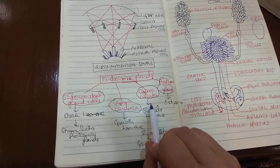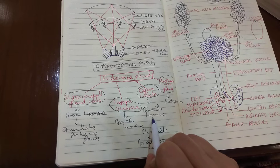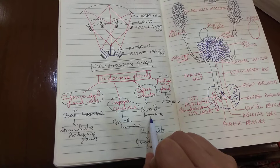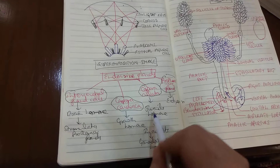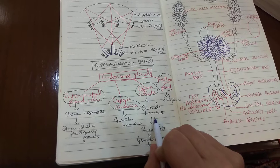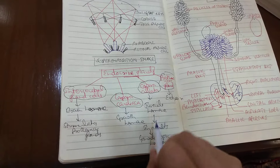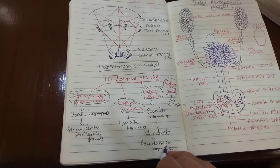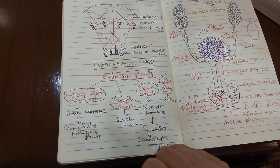Then comes the corpora allata — these are a pair of rounded bodies lying close behind the corpora cardica. They secrete juvenile hormone, which in nymphal stages maintains the nymphal characters and checks the appearance of adult characters, keeping the cockroach young. In the last nymphal stage when the last molting occurs, the corpora allata become inactive, juvenile hormone is absent, and the adult character appears. In adults, the corpora allata again become active and secrete gonadotropic hormone, which controls volatile sex attractants from the female and helps in the development and functioning of the accessory sex glands.